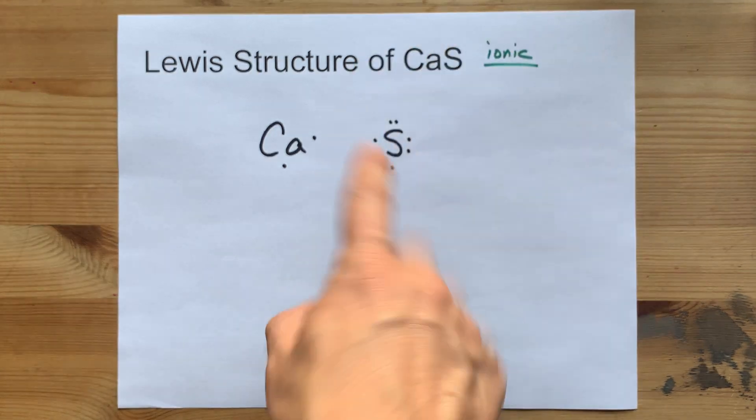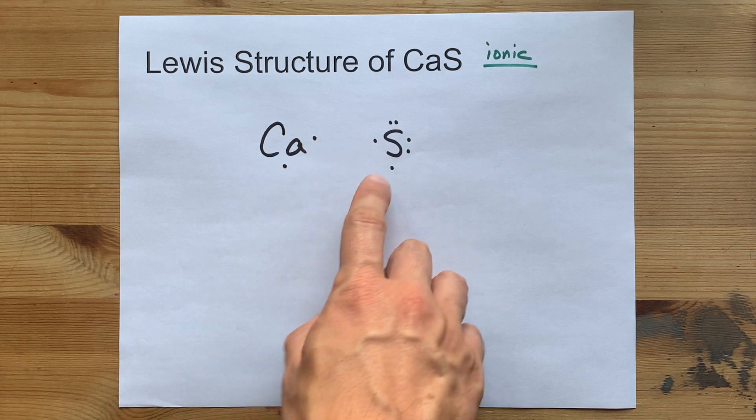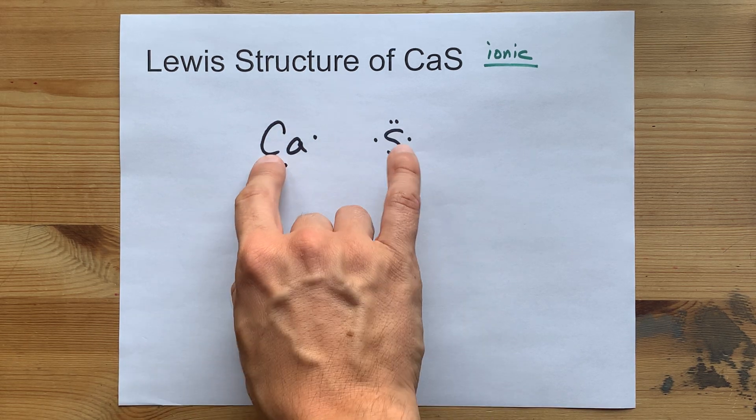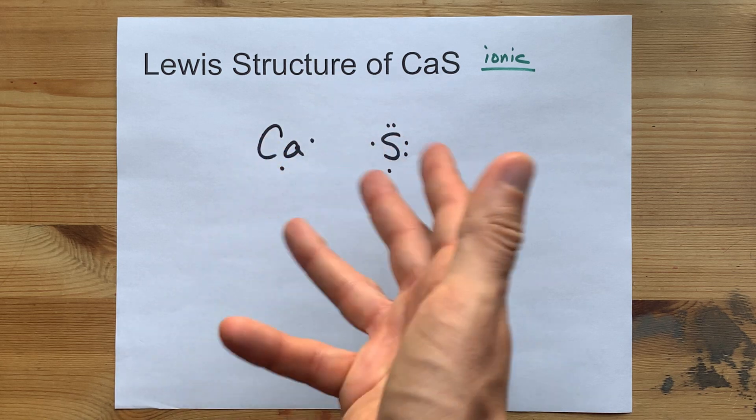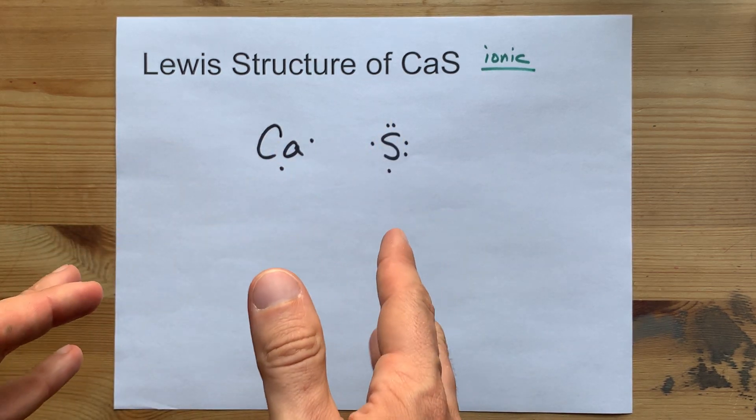Now again, in ionic compounds, the metal gives away its electrons to the nonmetal and you'll use as many of these as you need to make it so that all the nonmetals have eight electrons around them each,